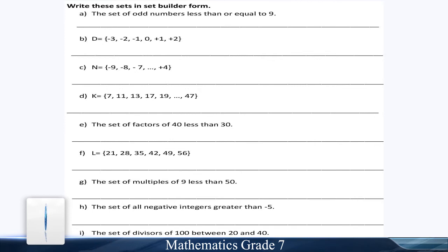E: The sets of factors of 40 less than 30. Part F: L = 21, 28, 35, 42, 49, 56. Part G: The sets of multiples of 9 less than 50.